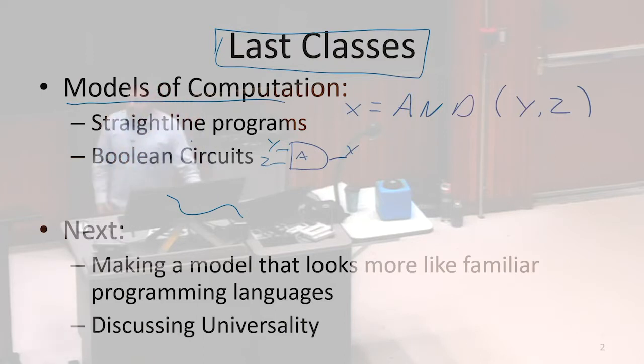Straight-line programs behave like programming languages. Boolean circuits behave like hardware, and we talked about them being equivalent in some ways. We explored precise definitions of what it means to compute with Boolean circuits. Next we're going to expand on straight-line programs, making them look more like programming languages you're familiar with, and show that none of these changes actually change what we are and aren't allowed to compute.